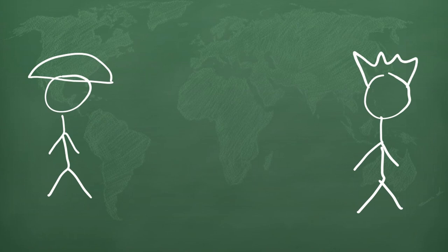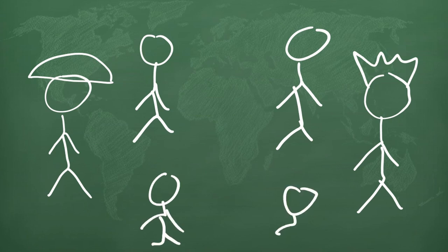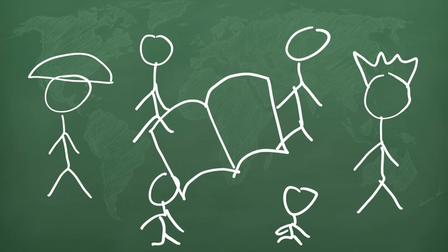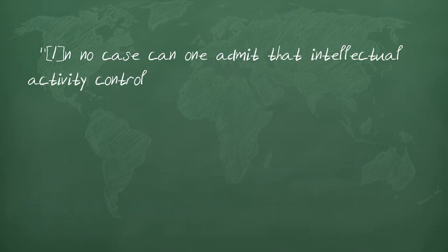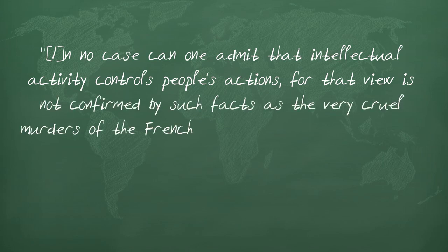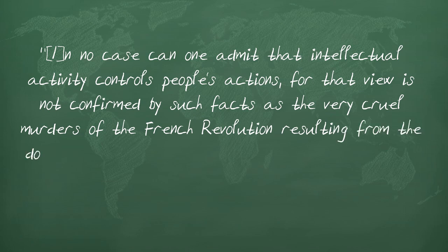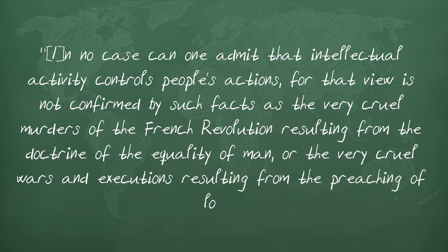Another kind of explanation, like universal histories, points to the interaction of many persons. But what force moves this multitude of people? asks Tolstoy. Yet a third kind of explanation, cultural history, points to intellectual activity as the prime mover of history. But Tolstoy objects that in no case can one admit that intellectual activity controls people's actions, for that view is not confirmed by such facts as the very cruel murders of the French Revolution resulting from the doctrine of the equality of man, or the very cruel wars and executions resulting from the preaching of love.